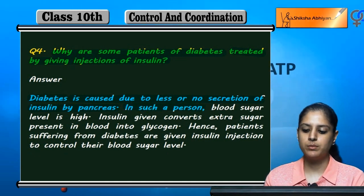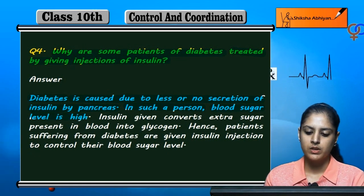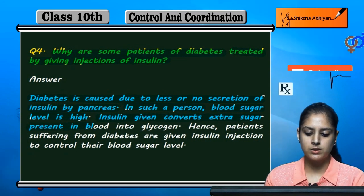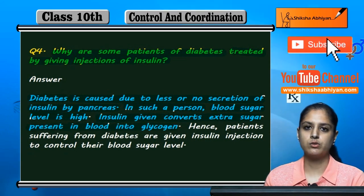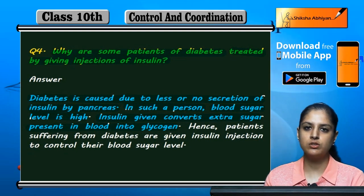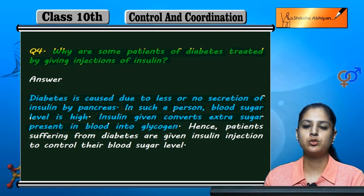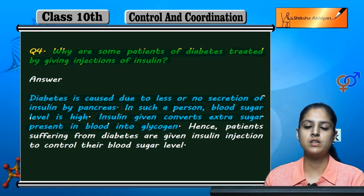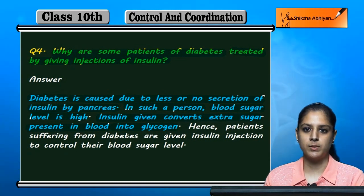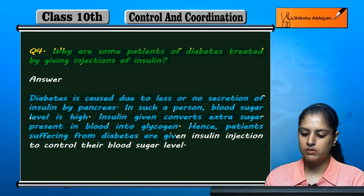In such a person — a diabetic person — blood sugar level बहुत high हो जाता है। Insulin converts extra sugar present in the blood into glycogen, क्योंकि diabetic person में amount of sugar बढ़ जाता है। So जैसे insulin का injection दिया जाता है, वो extra sugar जो body को required नहीं है, उसको breakdown करके glycogen में convert कर देता है।